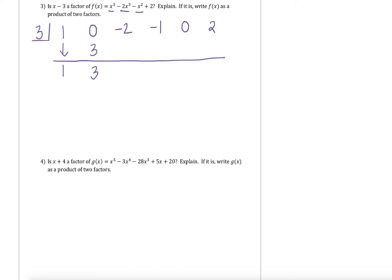3 times 3 gives us 9. Adding down gives me positive 7. 7 times 3 is giving us 21. Adding down, negative 1 plus 21 gives us 20. Then 20 times 3 gives us 60. Adding down, zero plus 60 gives us 60. Then to finish off, 60 times 3 gives us 180. And when we add down, we end up with 182.